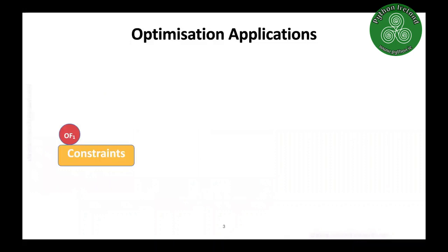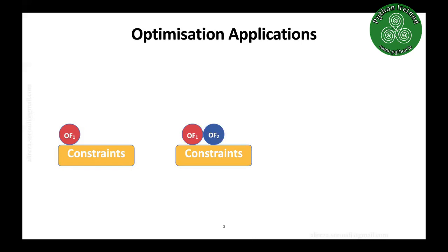Optimization applications can broadly be categorized into three categories. First, single-objective optimization: a set of constraints, one objective function — we want to minimize or maximize something while meeting specific requirements. Second, multi-objective optimization: we might have more than one objective function, such as minimizing cost and minimizing risk. These objectives are often in conflict — if you want to minimize risk, you have to pay more, but you also want to minimize payments.